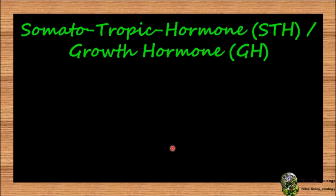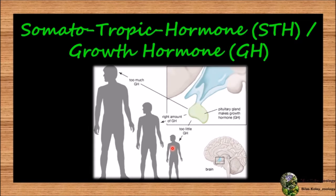We will discuss somatotrophic hormone, STH or growth hormone. It is proteinous in nature. It stimulates growth of the body. It increases growth of bone by increased absorption of calcium from the intestine. It increases lipolysis of adipose tissue. It increases amino acid uptake and protein synthesis. It also increases glucose level in blood by decreasing secretion of insulin. It also increases cell division.